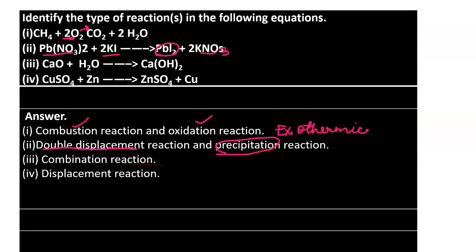In the third part, calcium oxide and water combine to form a single product - calcium hydroxide (Ca(OH)2). Since two compounds combine together to form a single compound, we call this a combination reaction.